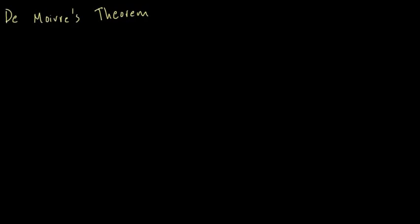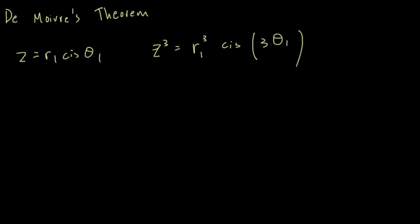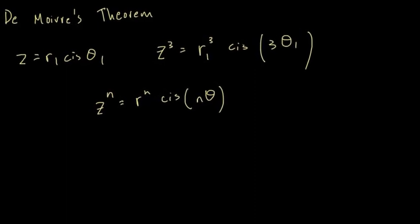Welcome back. In this lecture I'm going to talk about De Moivre's theorem. De Moivre's theorem is used when a complex number expressed in its polar form is raised to a power. For example, if Z equals r1 cis θ1, then Z to the power of 3 is r1³ cis 3θ1. The general formula for De Moivre's theorem is: Z raised to the power of n equals rⁿ cis nθ.